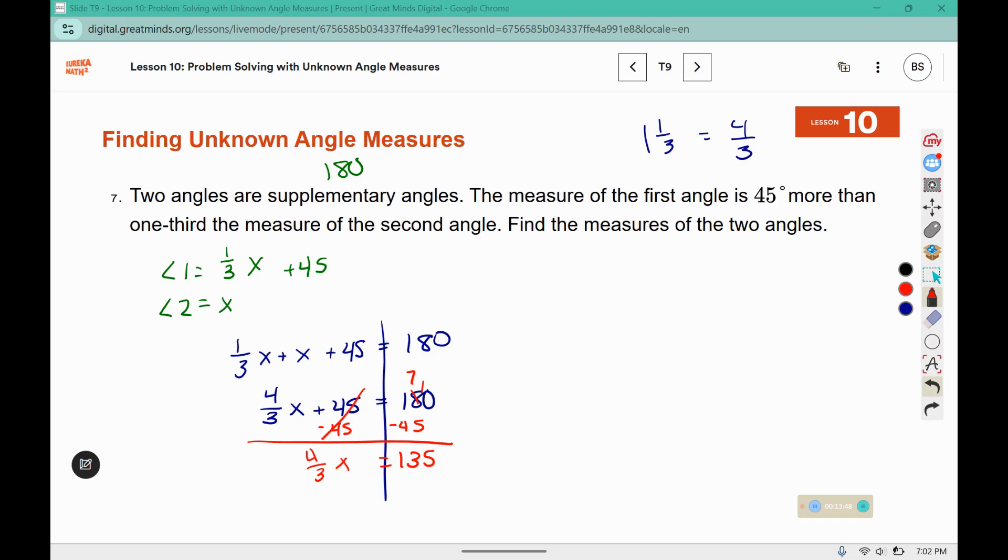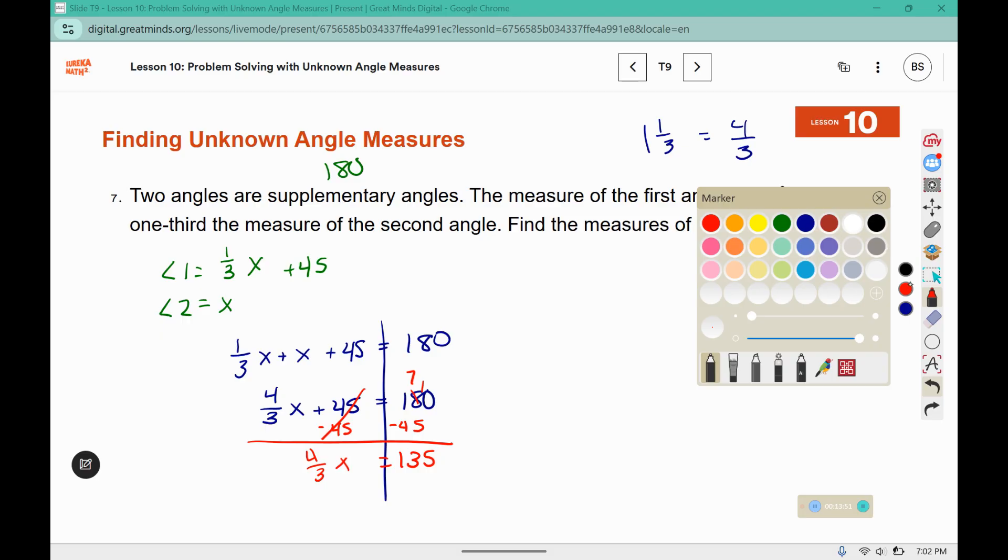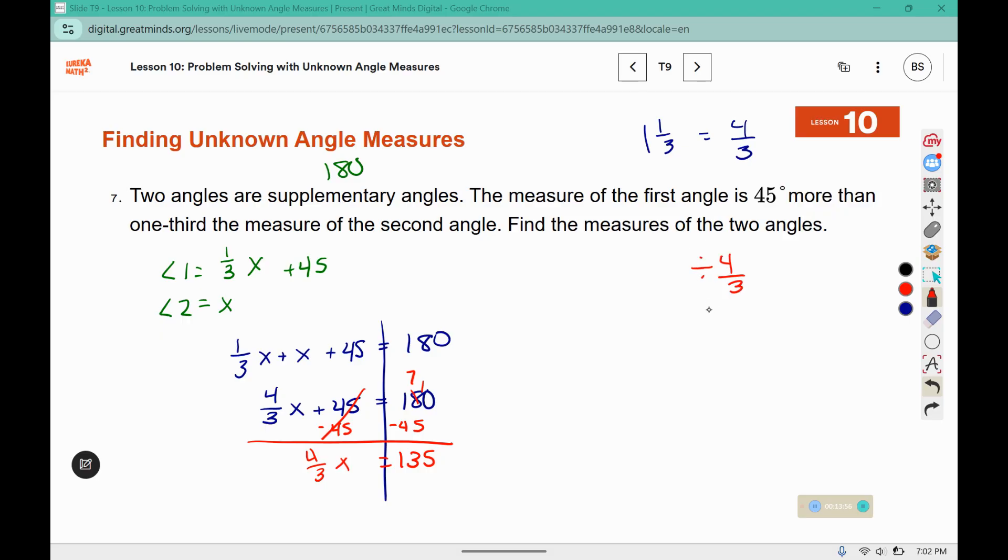So this is multiplied by four thirds. We can divide by four thirds, but we know from previous lessons that dividing by a fraction is the same as multiplying by the reciprocal. So I'm going to multiply both sides by three fourths. So now these leave us with x, and then we can do 135 times three and then divide that answer by four.